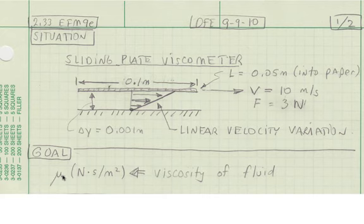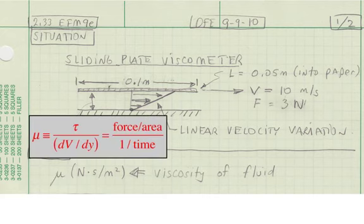Here is an easy way to remember units on viscosity. The definition of viscosity is shear stress over rate of shear strain. This is also called velocity gradient. The dimensions of shear stress are force per area.